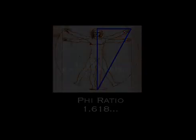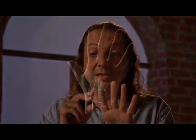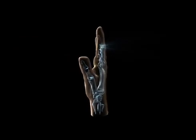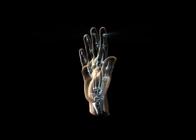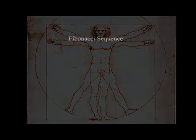The phi ratio is found everywhere in nature. When you look at your hand, the end of your finger is 1.618 — which is the phi ratio — smaller than the second part of your finger. And the second part is 1.618 smaller than the third part. And your hand relative to your forearm, your arms relative to your body, and so on.